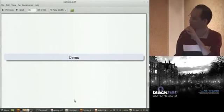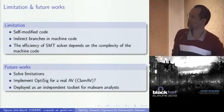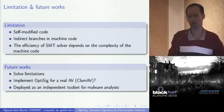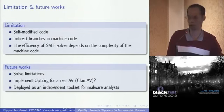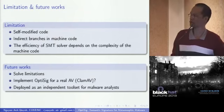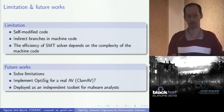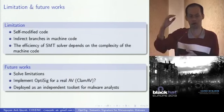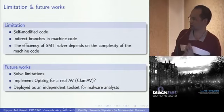OPTISIG looks nice, but there are some limitations. First, you cannot handle self-modified code because what we are doing is pure static analysis, and static analysis cannot deal with self-modified code. Second, if we have indirect branches inside the machine code, we have a problem because LLVM does not allow indirect branches. Finally, the efficiency of the SMT solver really depends on the complexity of the machine code. If the machine code is very complicated, the SMT solver can take a lot of time to return an answer.